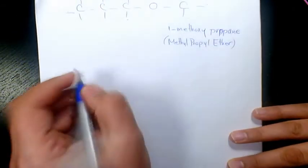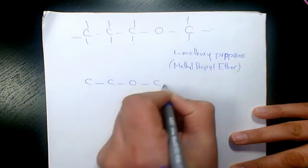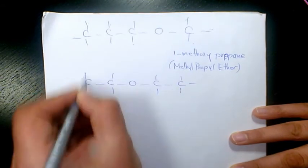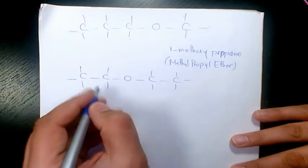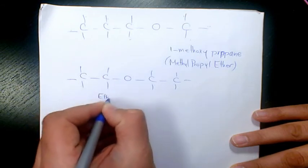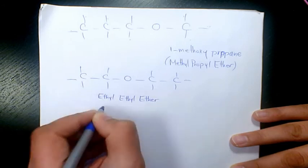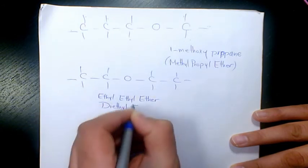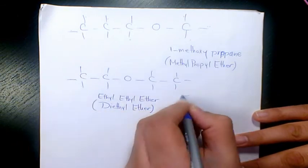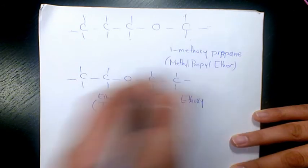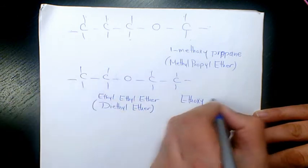Next one, when oxygen is here, so two on one side and two on the other side: 1, 2, 3, 4, 5, 6, 7, 8, 9, 10. So we have ethyl ethyl ether, or we call it diethyl ether. Or we can also call it ethoxy, because that's an alkoxy group, ethoxyethane. On one side we have two and the other side is going to be two as well.